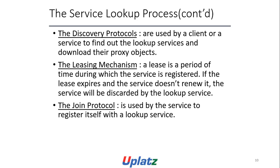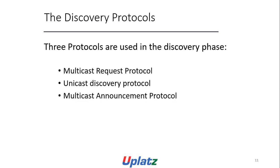Discovery and lookup service process: the discovery protocol is used by a client or a service to find lookup services and download proxy objects. The leasing mechanism — a lease is a period of time during which a service is registered. If the lease expires and the service is not running, the service will be removed by the lookup service. The join protocol is used by the service to register itself with the lookup service. Three protocols are used in the discovery phase: Multicast Request Protocol, Unicast Discovery Protocol, and Multicast Announcement Protocol.